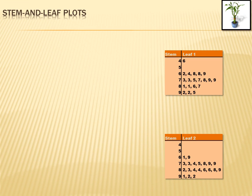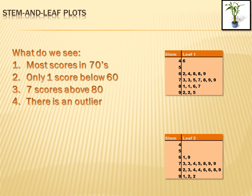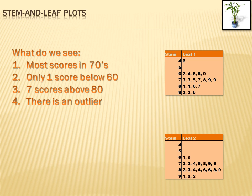What advantage have I gained by creating these stem and leaf plots? Let's look at test 1. I can see that most of the scores are in the 70s — more than in any other group. There are none in the 50s and only one in the 40s. I can also see there's only one score below 60, there are seven scores above 80, and there's an outlier: that 46 is way out in the extreme with nothing near it. By organizing the scores into a stem and leaf plot, I can see these patterns clearly.